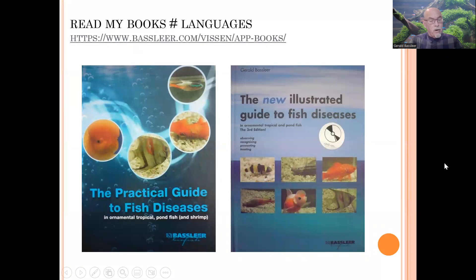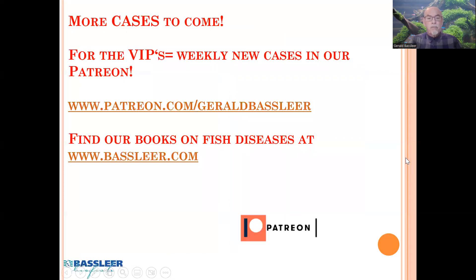Books and resources are available in different languages. The practical guide is available in seven languages and can be found on our website, Bassleer.com — this can help you become a specialist. If you want specialized training, visit my Patreon channel and get our books to become more acquainted with fish diseases. These videos hopefully help you become a better aquarist in understanding, diagnosing, and treating fish diseases. Thank you for watching.